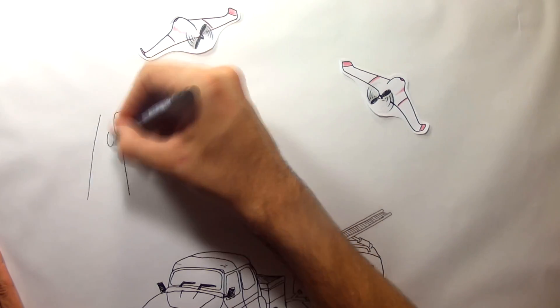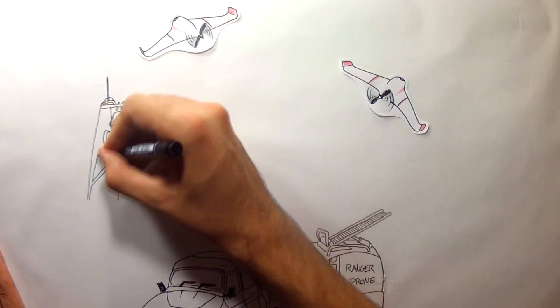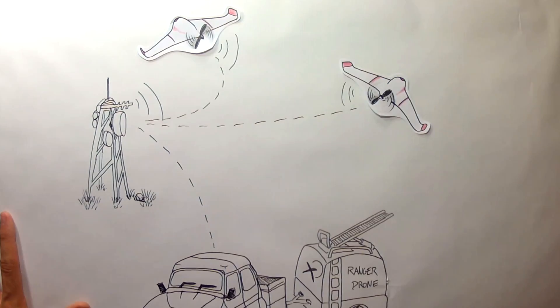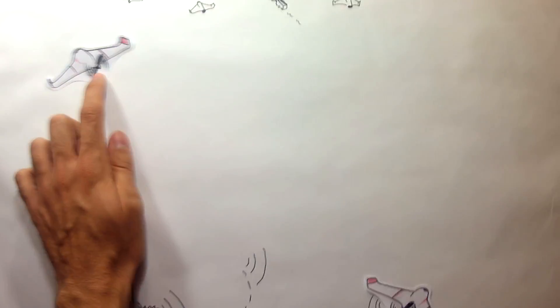The drones use GSM telemetry with 3G when they cover long distances. They constantly send their position and status. This way, all aircraft can communicate among themselves and with the main CPU that coordinates the mission.